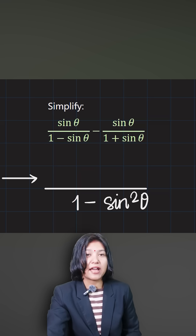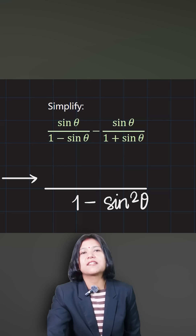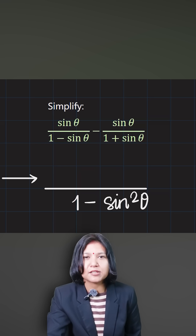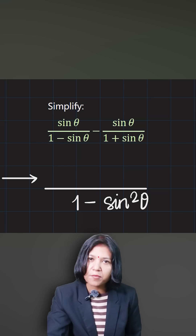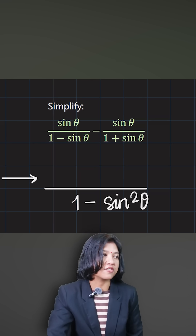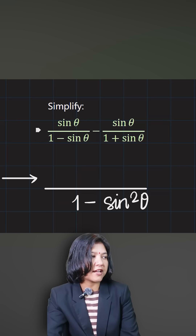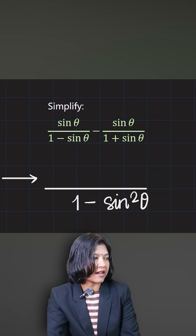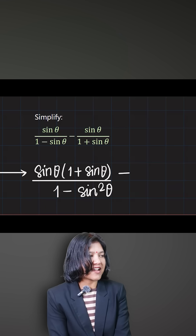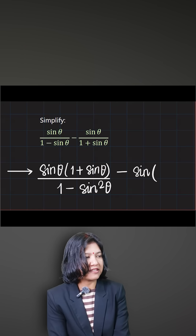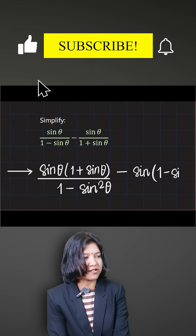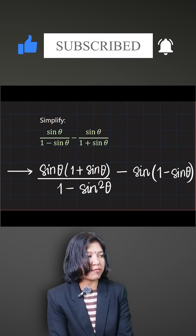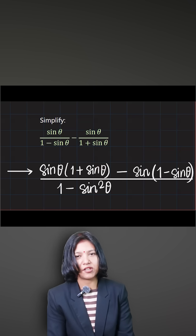At the top, you can simplify by cross-multiplying each numerator with the opposite denominator. So sinθ gets multiplied with (1 + sinθ), and (−sinθ) gets multiplied with (1 − sinθ). Now they share the common denominator 1 − sin²θ.